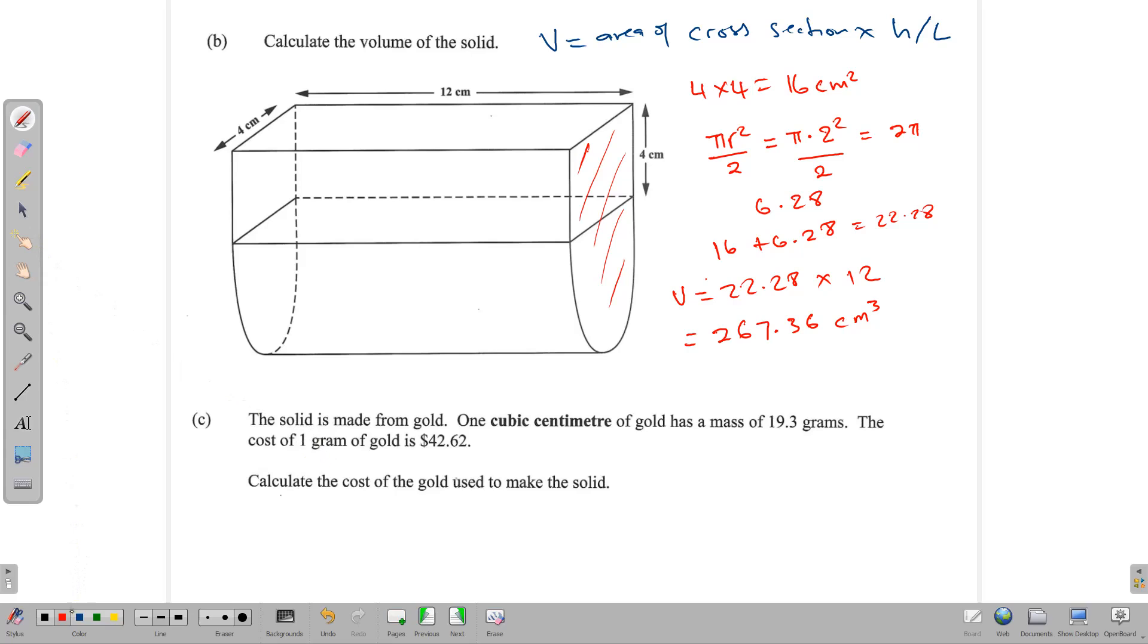Part C says the solid is made from gold. One cubic centimeter of gold has a mass of 19.3 grams. The cost of one gram of gold is $42.62. So we should calculate the cost of the gold used to make the solid. So we have the volume. First we need to find the mass by using this number, 267.36 and multiplying that by 19.3. Each centimeter cube measures 19.3, so it's a straight multiplication. And once you multiply that by 19.3, we get a number that is roughly 5,160 grams. And it's actually 5,160.048.